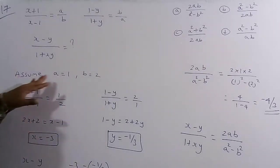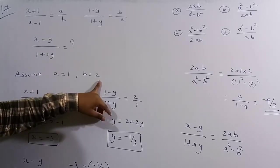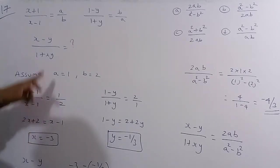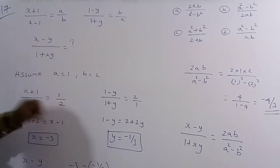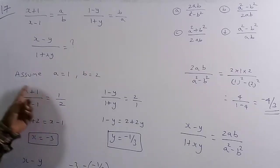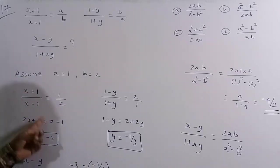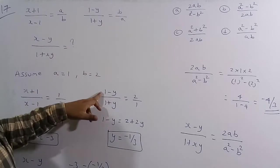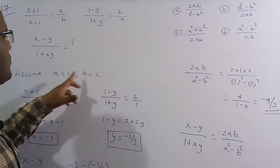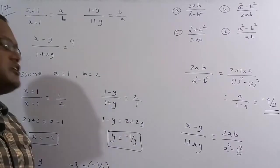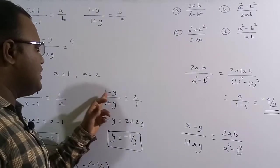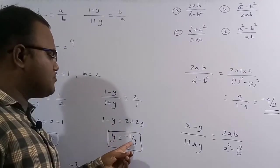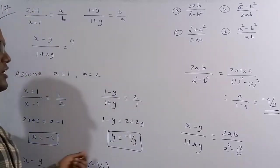Substituting a = 1, b = 2 into (x+1)/(x−1) = 1/2: cross multiplying gives 2x + 2 = x − 1, so x = −3. For (1−y)/(1+y) = 2/1: cross multiplying gives 1 − y = 2 + 2y, so y = −1/3.